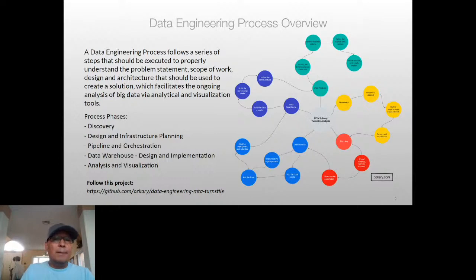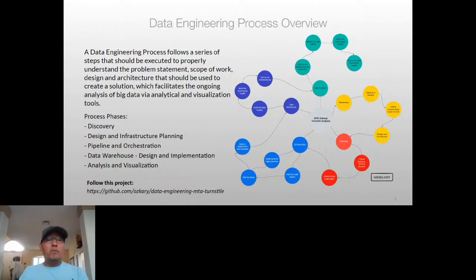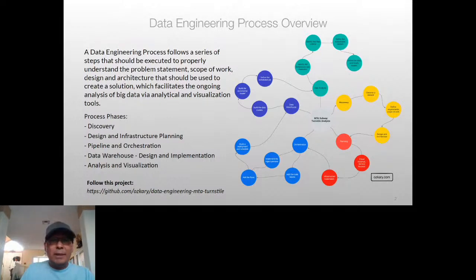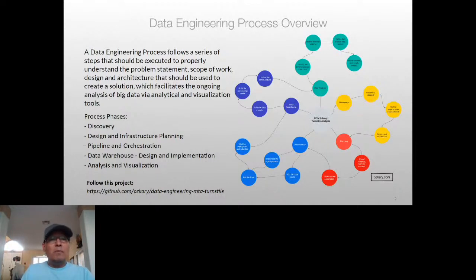Data engineering process has a few phases. We start with the discovery phase, where we get into understanding what we're trying to do, what the problem statement is, and what we're trying to solve. Then we move into design and infrastructure planning, where we talk about how we're going to run it and what the infrastructure requirements are. Then we move into pipeline and orchestration, where we get very detailed into the implementation and DevOps efforts.